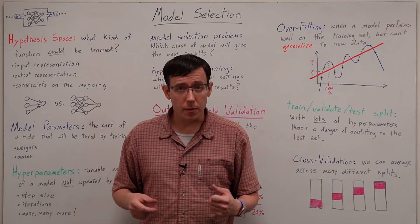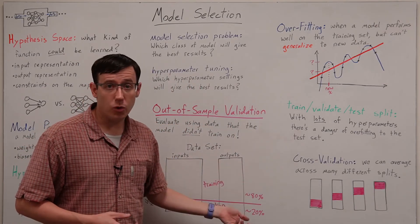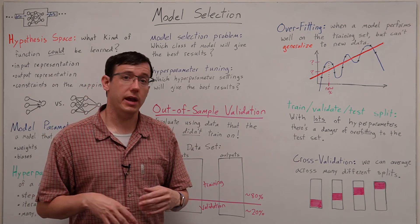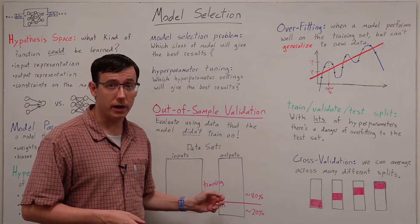A good rule of thumb for how much data to leave out is an 80-20 split. There will absolutely be problems and models where we want to do some other split but this is usually a good starting point.